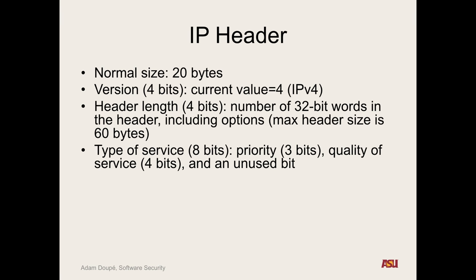The type of service — these are bits used to flag priority or quality of service, or there's actually an unused bit in here. Why would you include an unused bit in something so important like the IP protocol? Every packet sent on all of our millions and billions of devices includes this unused bit.